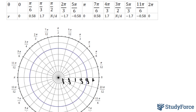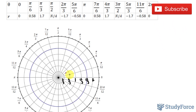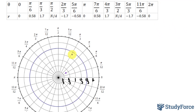Our first point has already been plotted at 0 and 0. Our next point was π/6 and 0.58, so π/6 and 0.58 will be between these rings — we'll put a point down right there. Next we have π/3 and a radius of 1.7; π/3 is here, and 1.7 is the largest number we're going to have, so that goes here.